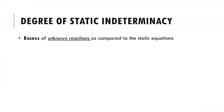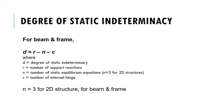Degree of static indeterminacy can be defined as a set of unknown reactions as compared to the static equations, and it is commonly known as redundant. The formula to determine the degree of static indeterminacy for beam and frame structure is d equal to r minus n minus c, where d is the degree of static indeterminacy, r is number of support reactions, n is number of static equilibrium equations, n will be equal to 3 for 2D structures, and c is number of internal hinges.